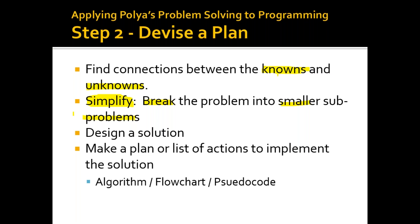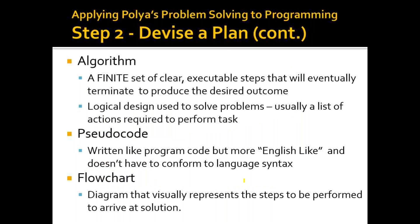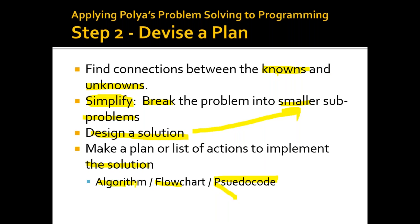When we determine what the small sub-problems are and what strategies to use to solve them, we design the solution according to those sub-problems. Then we make a plan or list of actions to implement the solution, such as an algorithm, a flowchart, or pseudocode. We need to understand what an algorithm is, what a flowchart is, and what pseudocode is.